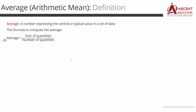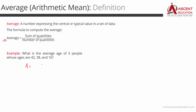Now let's look at different kinds of questions. We'll start with a very easy example. What is the average age of three people whose ages are 42, 38, and 16? We find the sum of their ages: 42 plus 38 plus 16, divided by the number of elements, which is 3. 42 plus 38 is 80, plus 16 is 96, divided by 3. So the average age is 32 years.